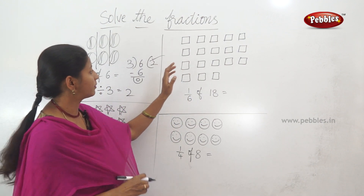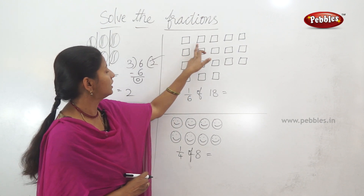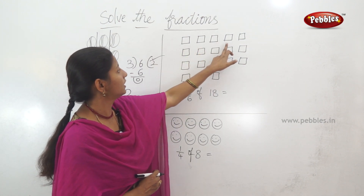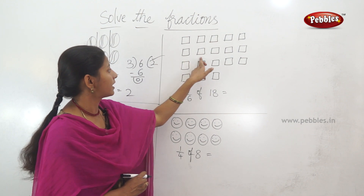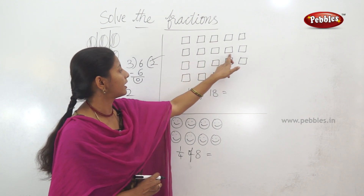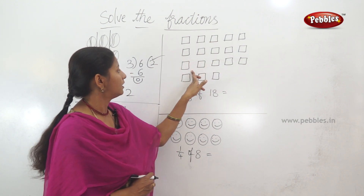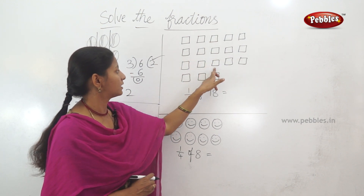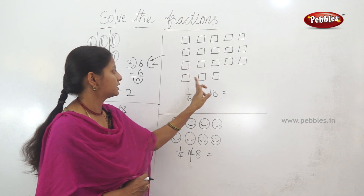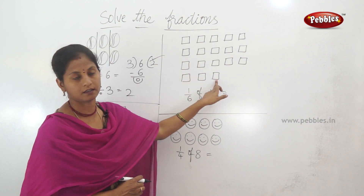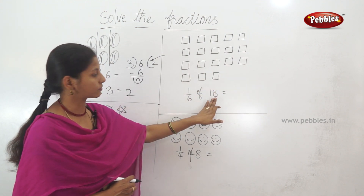If you have squares, count the number of squares. 1, 2, 3, 4, 5, 6, 7, 8, 9, 10, 11, 12, 13, 14, 15, 16, 17, 18. So, 18 squares.